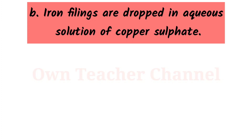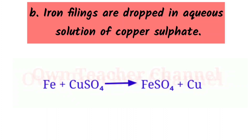Iron filings are dropped into an aqueous solution of copper sulphate. Iron is more reactive than copper, so it can displace copper from its salt copper sulphate. The colour of the solution changes from blue to green.